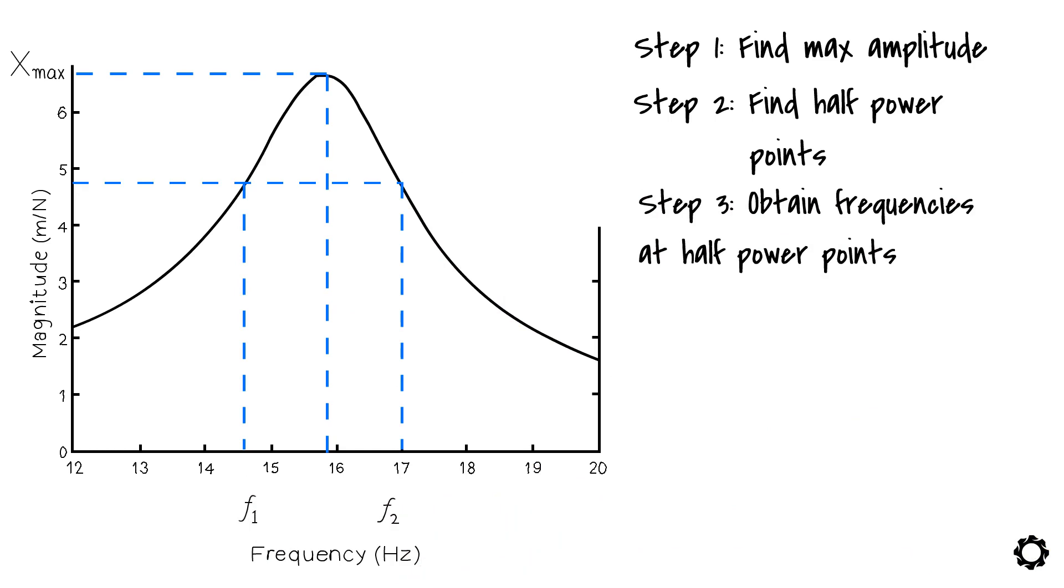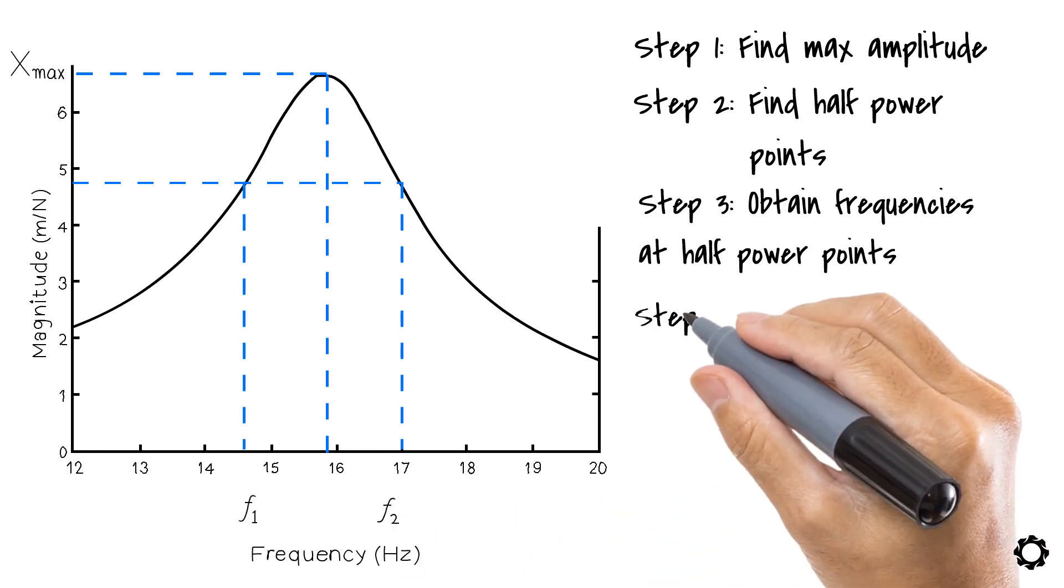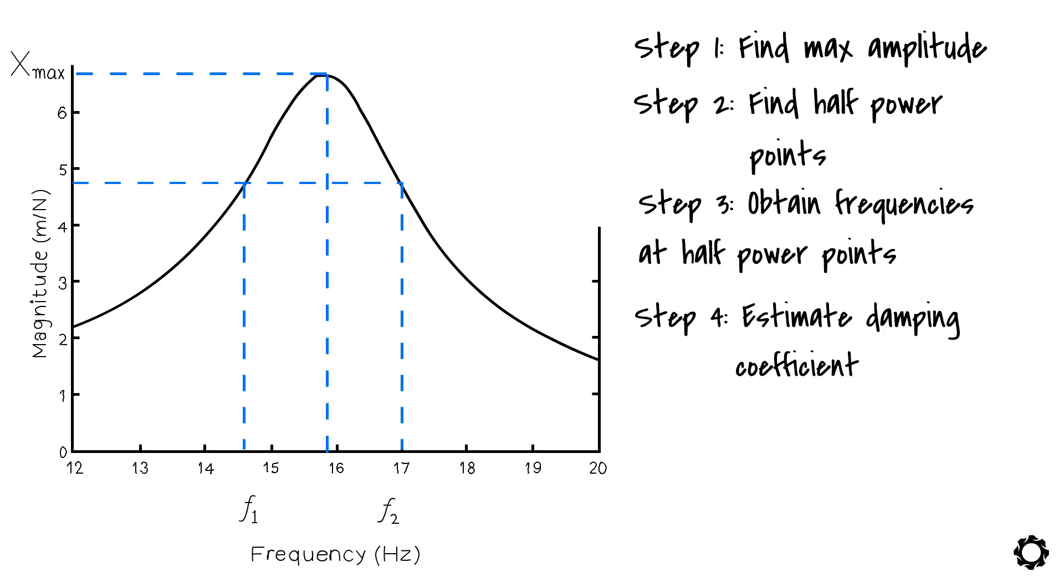Once we have these frequency values, we can estimate the damping coefficient by substituting F1 and F2 in the following equation. Zeta approximately equals F2 minus F1 divided by 2 times Fn, which equals Delta F divided by 2 times Fn, where Fn is the frequency at the point of maximum magnitude.